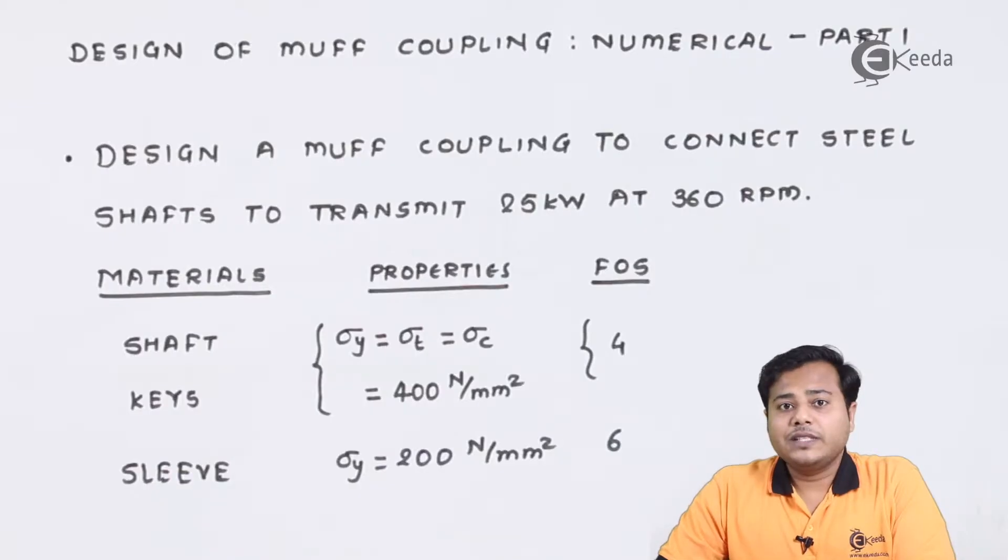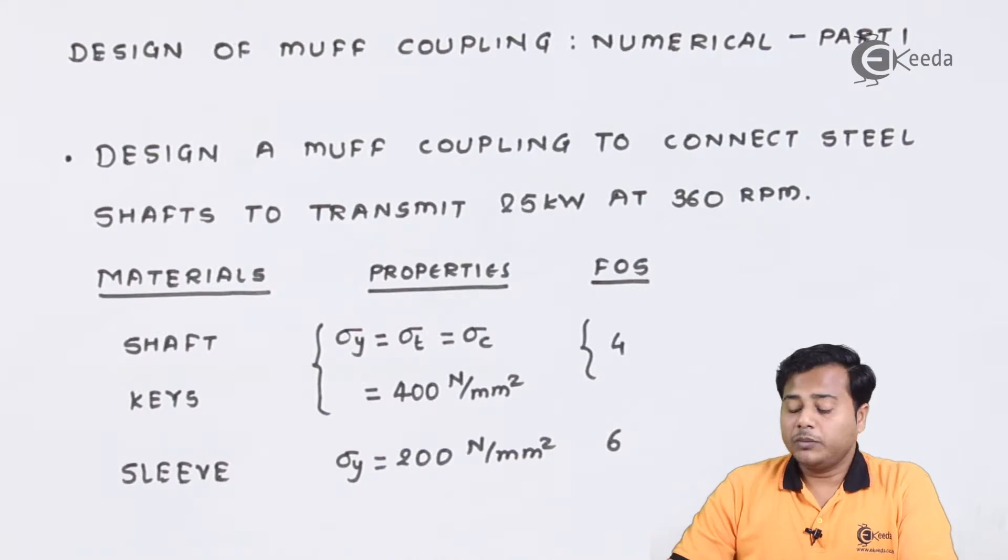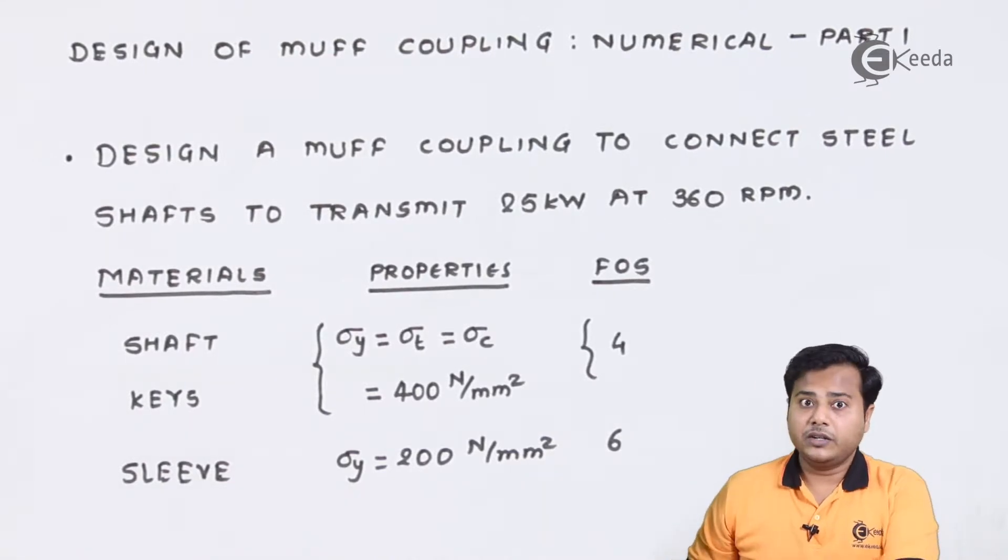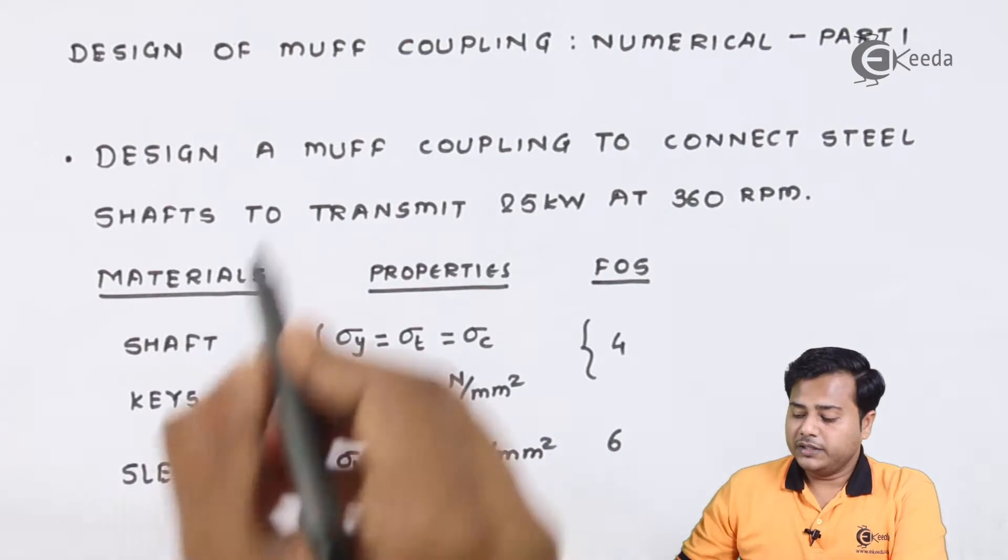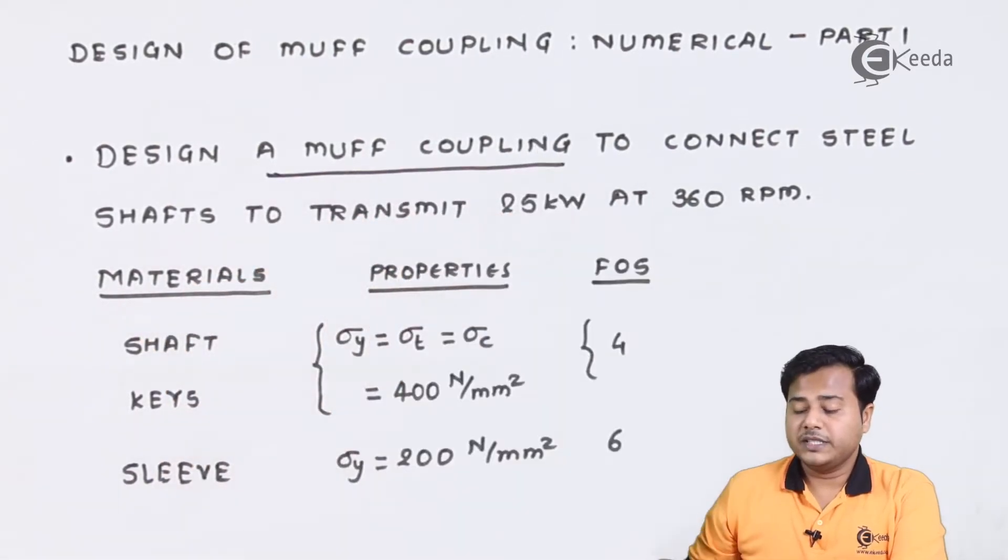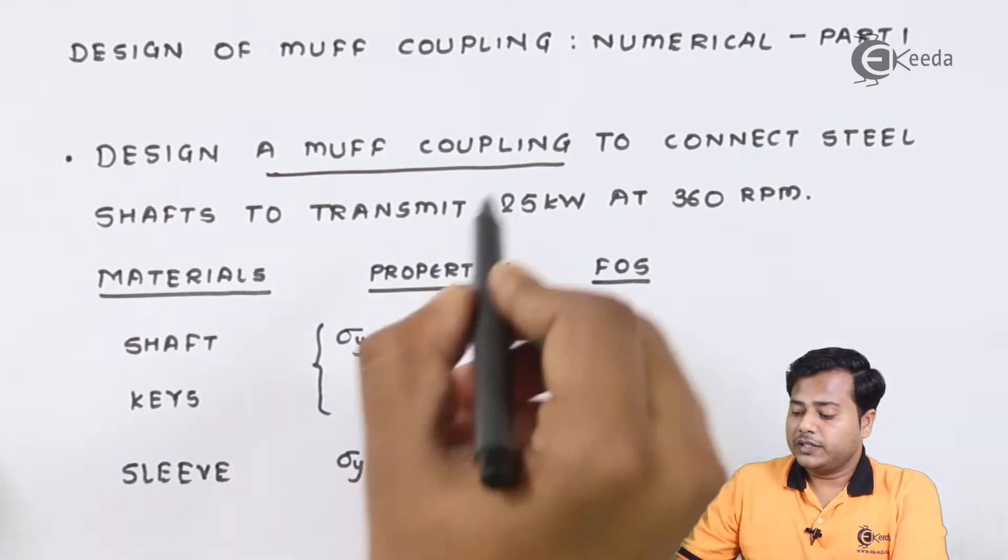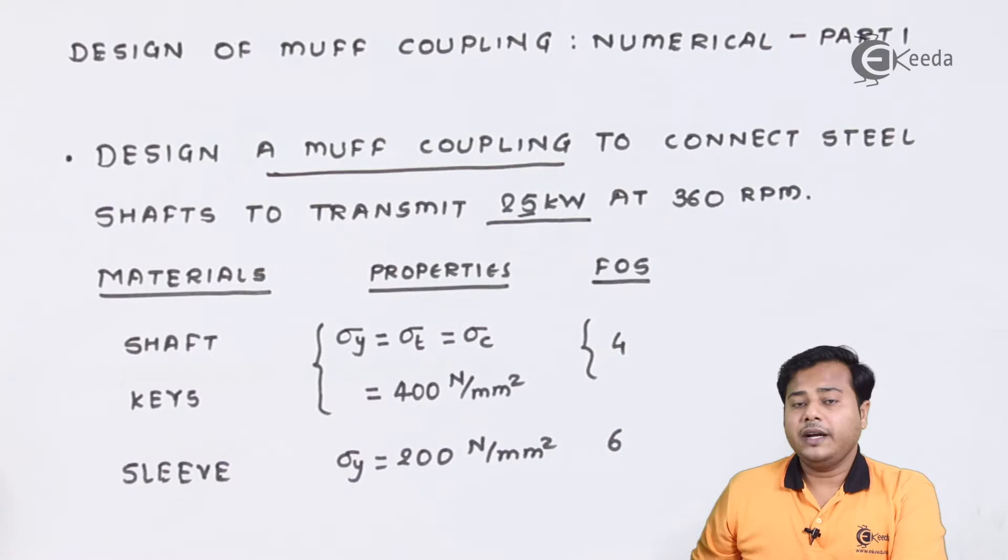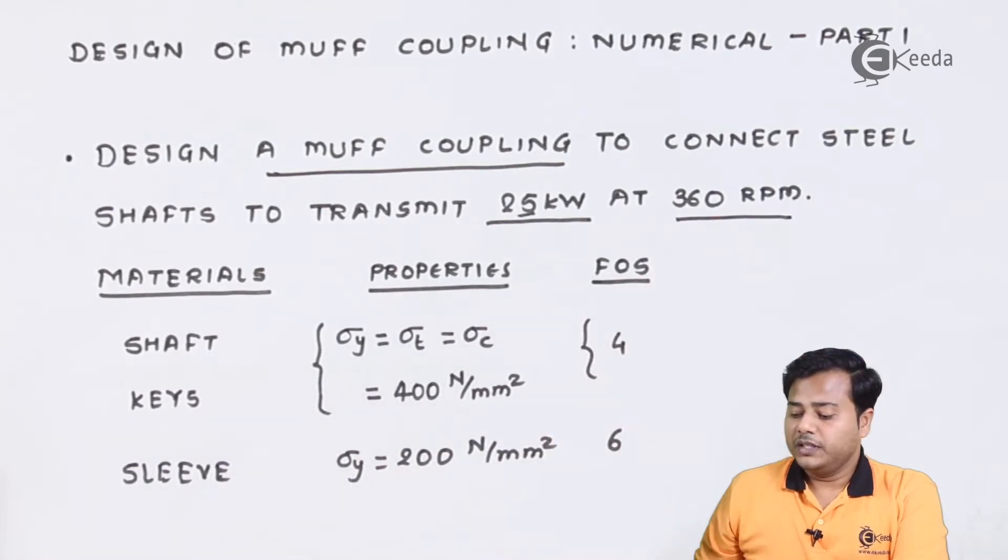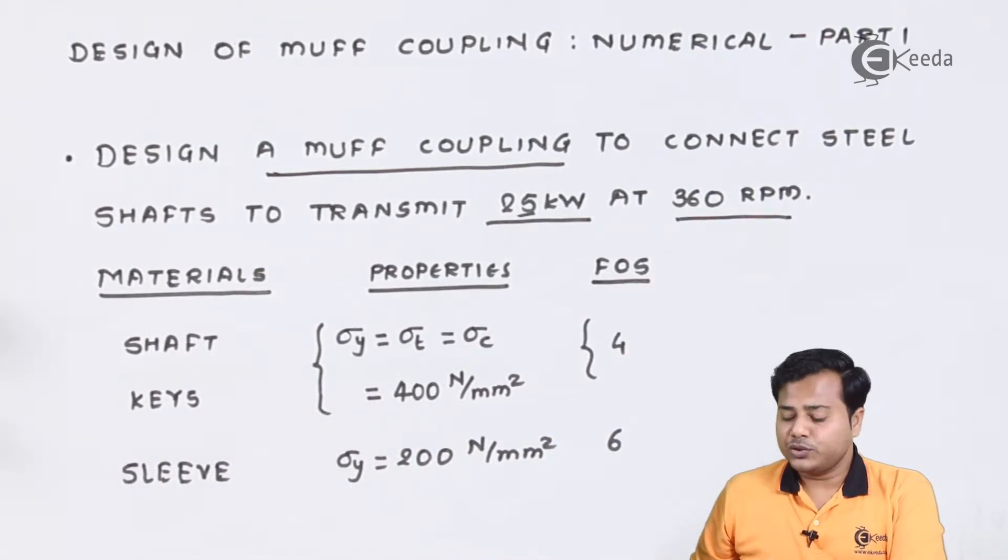As you can see on the screen, the problem statement is given. Let's quickly read out the important parameters. Design a muff coupling to connect steel shafts to transmit 25 kilowatt at 360 rpm.